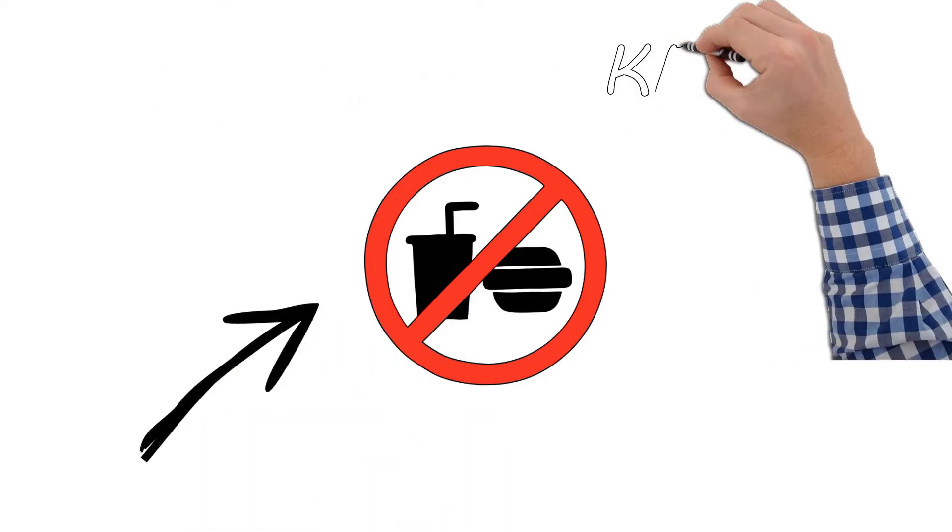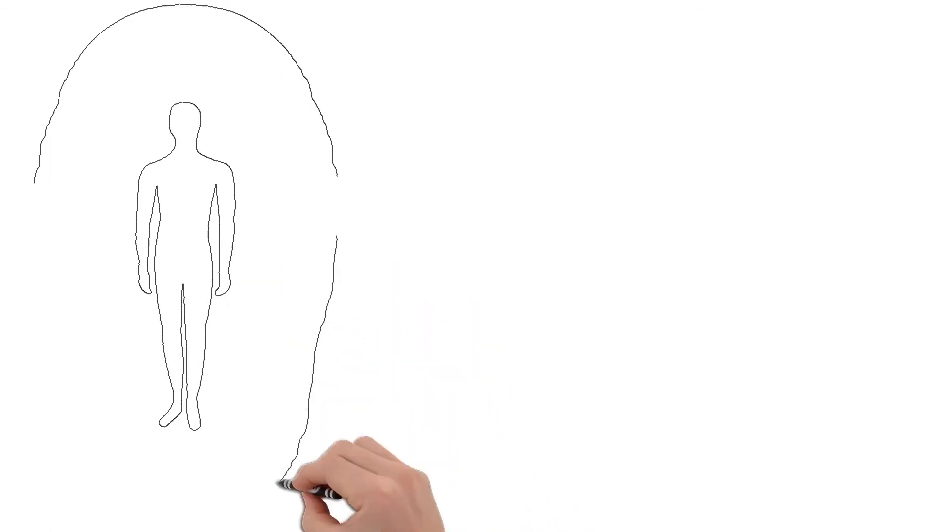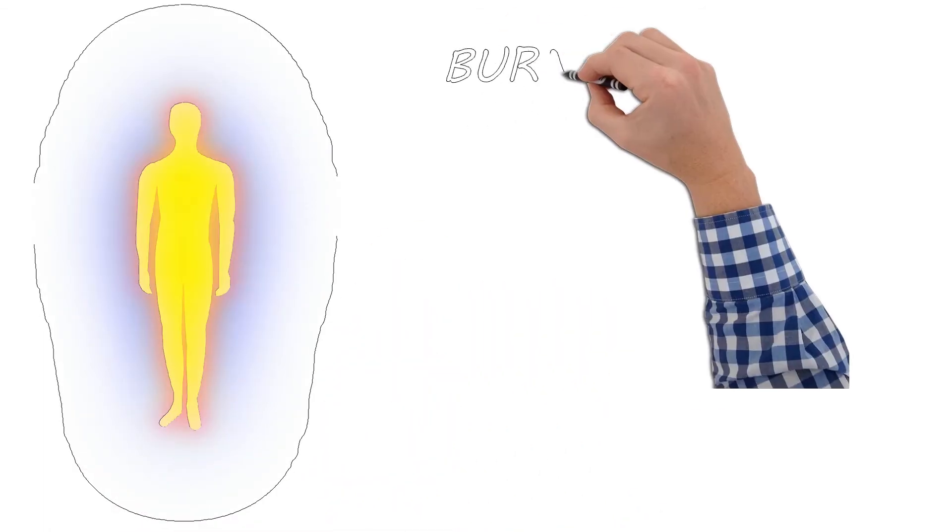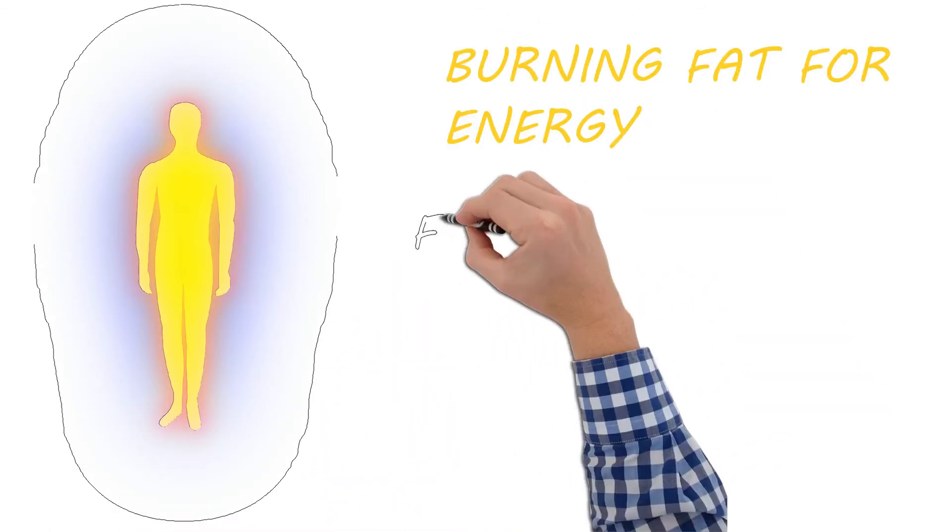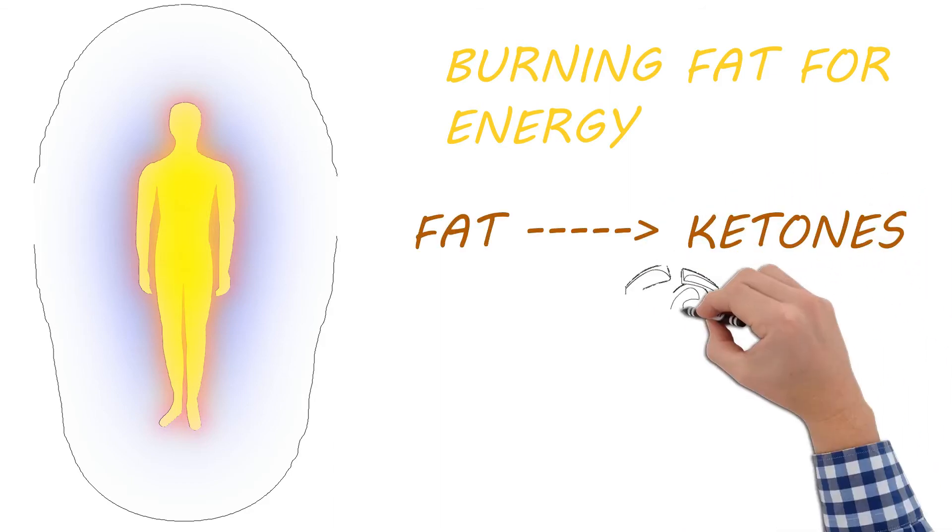This reduction in carbs puts your body into a metabolic state called ketosis. When this happens, your body becomes incredibly efficient at burning fat for energy. It also turns fat into ketones in the liver, which can supply energy for the brain.